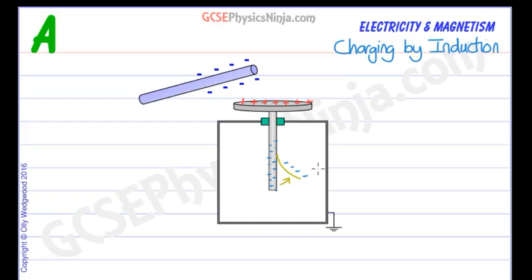And so the electroscope, the gold leaf electroscope, is an instrument for checking for charged objects such as this negatively charged rod.